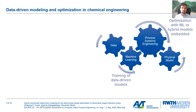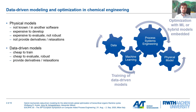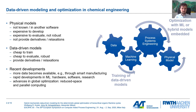So why should we use data-driven models in our optimization approaches? In many cases physical models are not known and might be expensive to develop. Also, some physical models might be available in another software or might be expensive or not robust to evaluate. In addition, they often do not provide the necessary relaxations or derivatives for optimization. Data-driven models, on the other hand, are usually relatively cheap to train and very cheap and robust to evaluate. We can also get derivatives and relaxations easily. In addition, there have been very recent developments that make more data available, for example through smart manufacturing from industry.